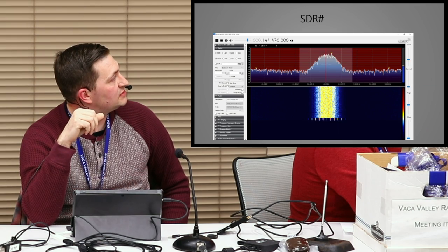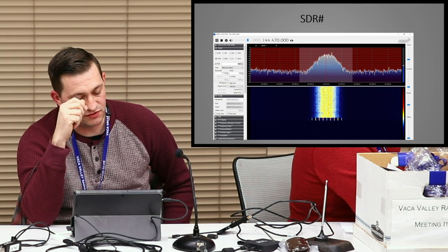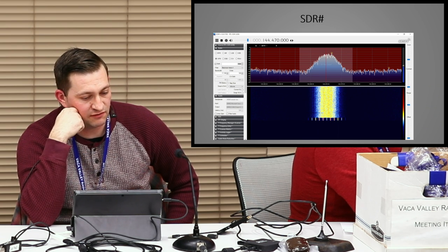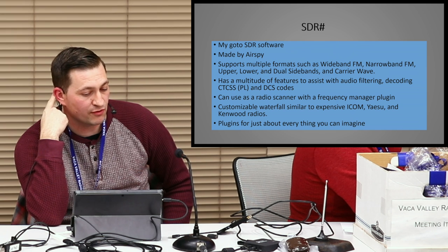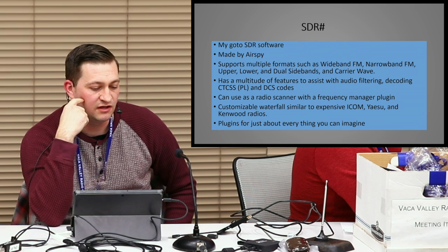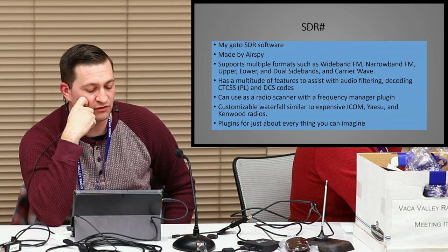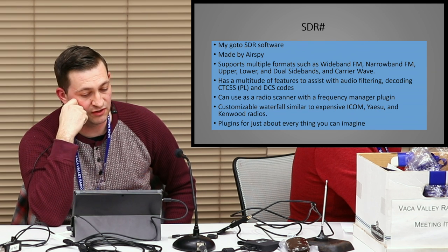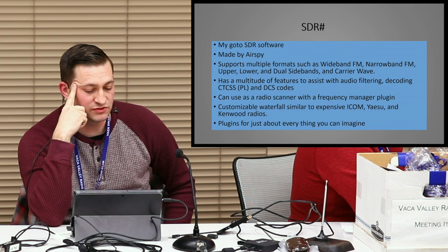This is my favorite software to figure out what's going on on the bands — SDR Sharp. I have it tuned to my DMR hotspot. It supports all the normal bands you'd see: wideband and narrowband FM, upper, lower, and dual sideband, and carrier wave. It has plug-ins you can add if you want to figure out what a PL tone is, your digital squelch, and there's a plug-in for doing radio scanning, but I prefer Unitrunker because most things around here are trunked.